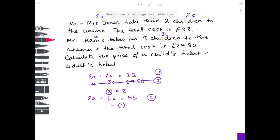So what am I going to do now? Well, I'm going to take equation 1 away from equation 3. So 2A take 2A, it disappears. 6C minus 2C is 4C, and 55 minus 33 is 22.